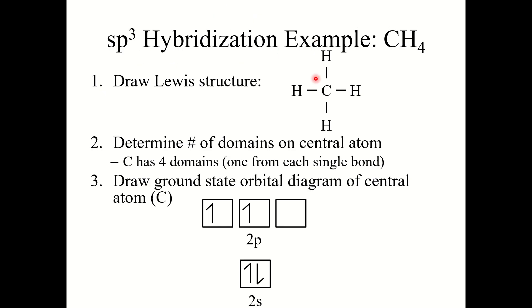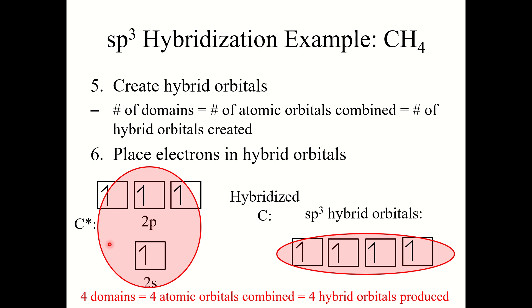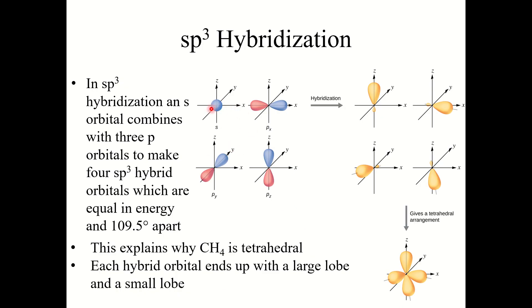Now let's look at an sp³ hybridization example: CH₄, or methane. Draw the Lewis structure, determine the number of domains on the central atom — it has four. Carbon's ground state is 2s², 2p². We promote one electron to maximize unpaired electrons. Since we have four electron domains, we combine all four atomic orbitals — one s and three p orbitals — to produce four sp³ hybrid orbitals. When overlaid, these look just like the tetrahedral arrangement, explaining why CH₄ is tetrahedral.